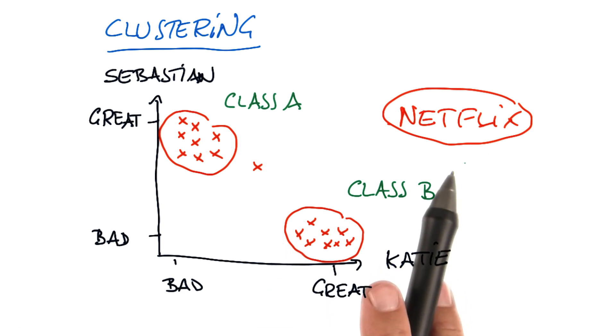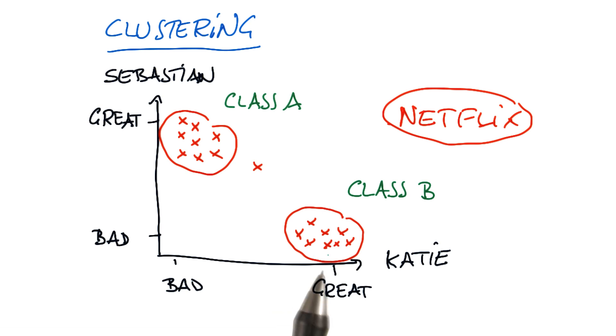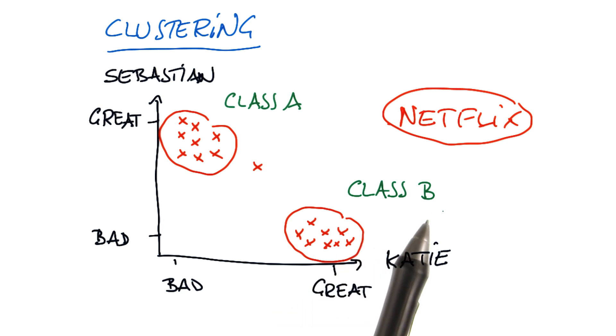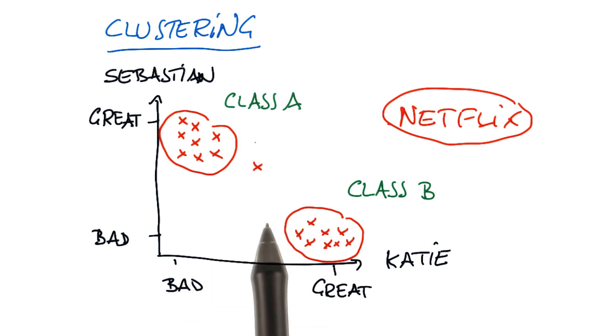And the reason why Netflix might want to know this is next time Katie comes in, you want to propose a movie that fits into class B and not into class A. Otherwise, she's very unlikely to watch this movie. And conversely for me, you want to reach into class A versus class B.